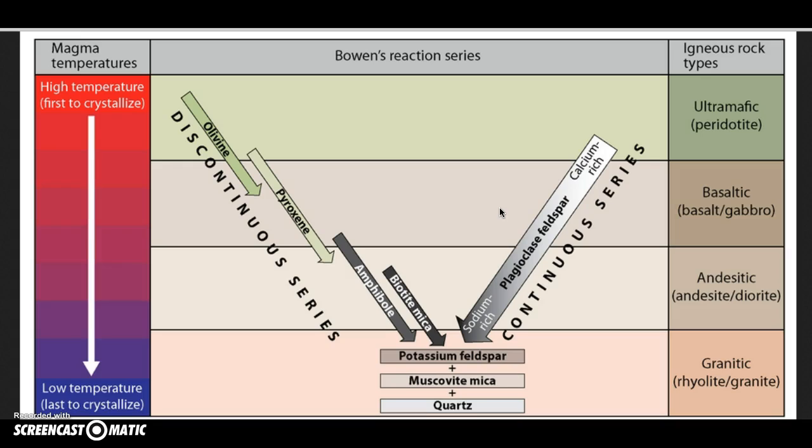Norman Bowen started to work on understanding this process back in the 1920s and 1930s. He was doing research at Carnegie Institute, and what he started to do was take actual igneous rocks and grind them up into a powder so that they would have all of the different types of minerals - quartz, mica, feldspar, pyroxene, olivine, amphibole, biotite, and all the feldspars.